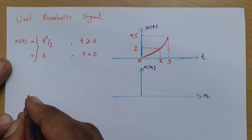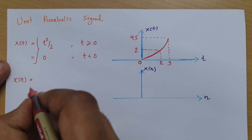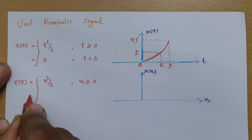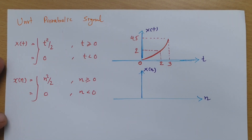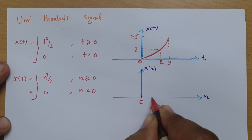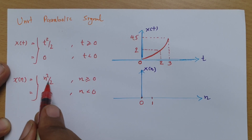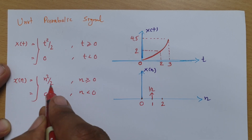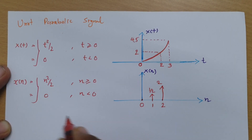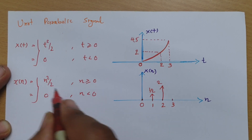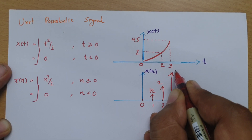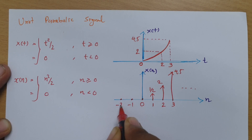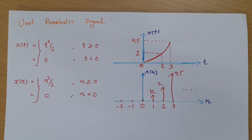For discrete time, we represent the unit parabolic signal as x of n, which equals n squared by 2 for n greater than or equal to 0, and 0 for n less than 0. At n equals 0, the value is 0. At n equals 1, it is 1 squared by 2, which is 0.5. For the second sample at n equals 2, it is 2 squared by 2, giving 2. For the third sample at n equals 3, it is 3 squared by 2, giving 4.5. For n less than 0, such as minus 1 or minus 2, the value is 0. This is how the discrete-time unit parabolic signal looks.